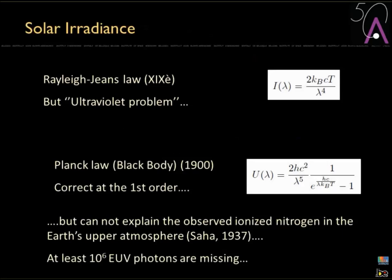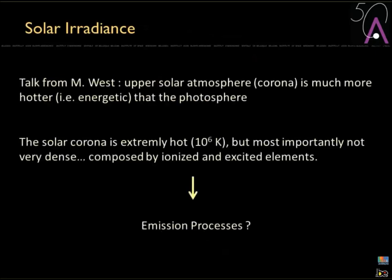The Planck law is actually perfect for the Sun at first order. But this law cannot explain some observations made on Earth, especially some bands of ionized nitrogen discussed in 1937. To explain those ionized nitrogen bands, at least one million UV photons are missing if you only take the Planck law into account. So what do we do?